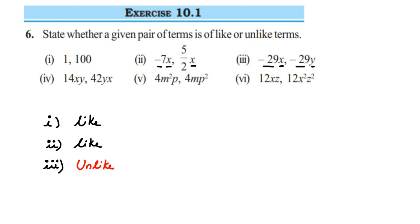The fourth one: we have 14xy and 42yx. Don't consider 14 and 42 — just check the variables. We have x and y in both terms. Though the order is different, we can still consider them the same, so these are like terms.